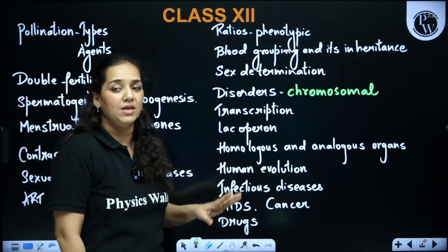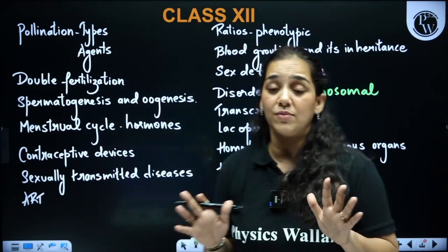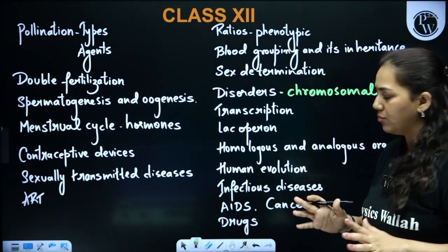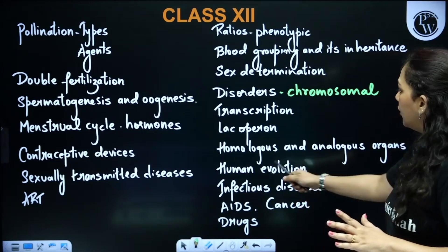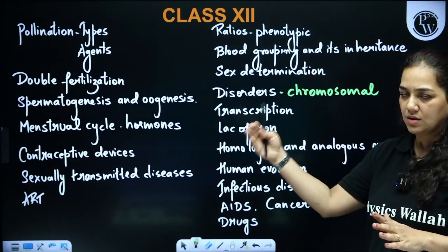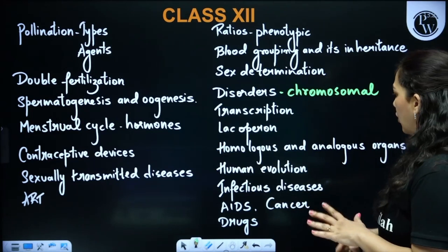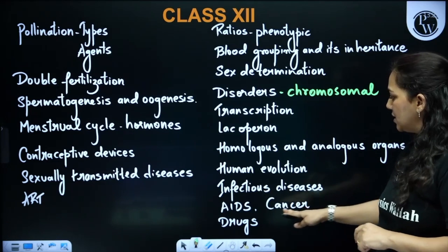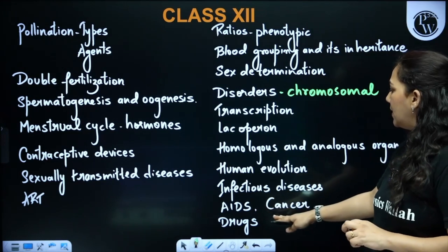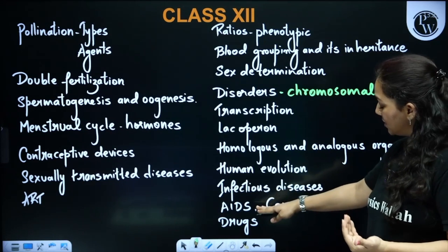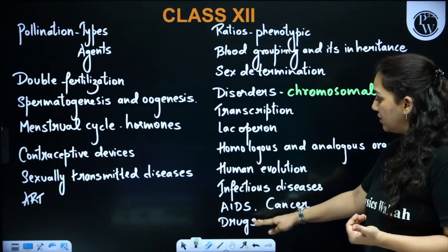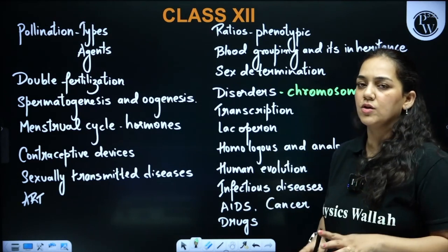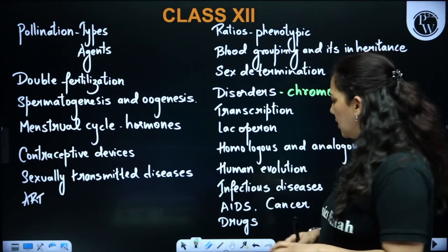When we come to Evolution, homologous and analogous organs — their definitions and examples — become very important. Human evolution and its various forms are important. Infectious diseases, AIDS, cancer, and drugs come under Human Health and Disease, and the questions usually asked from here are easy types.